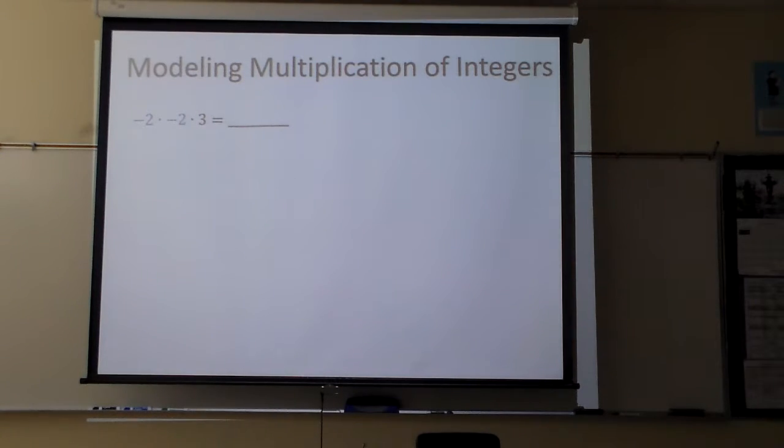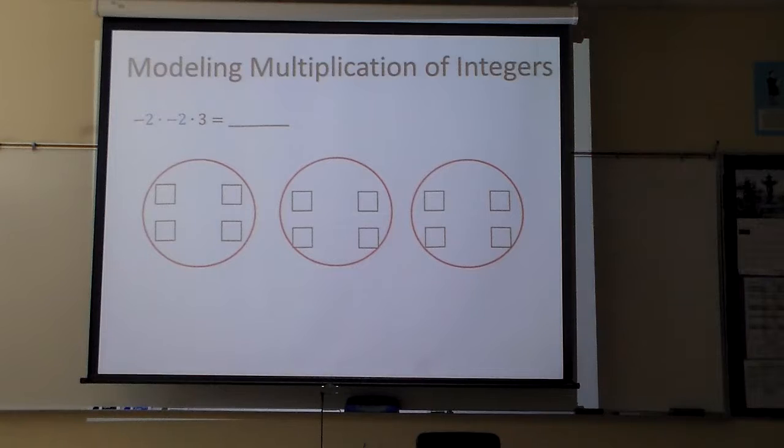What happens if I have a negative 2 and a negative 2 first? Well, let's look at this here. There's negative 2, the other negative, but now I've got to make that right there. I've got to flip those signs, and so I actually end up with what? 3 groups. So my answer will be positive 12.